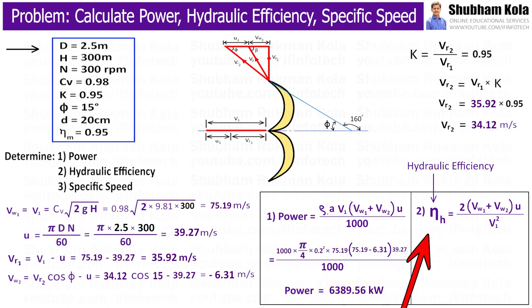Next we want to calculate hydraulic efficiency of Pelton-wheel turbine. And here is the formula. So, we already have all these values. And by calculating this, we will get hydraulic efficiency 0.9569 or 95.69%.